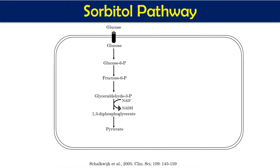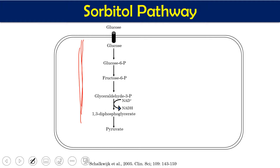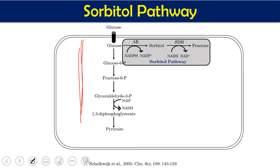Now we will see how diabetes mellitus causes cataract. The pathway mainly responsible for cataract is called the sorbitol pathway or polyol pathway. Normally, glucose entering any cells is metabolized through glycolysis, then the TCA cycle, Krebs cycle, and electron transport chain. However, when glucose entry into cells is too high, not all glucose flux goes through glycolysis — there is a diversion, and one major diversion is the sorbitol pathway.